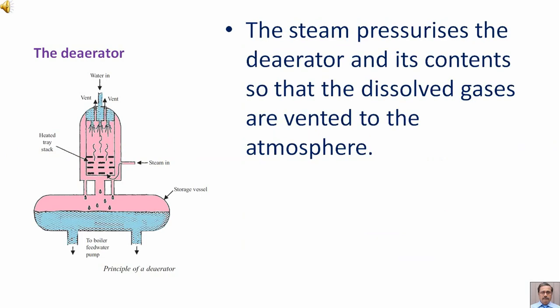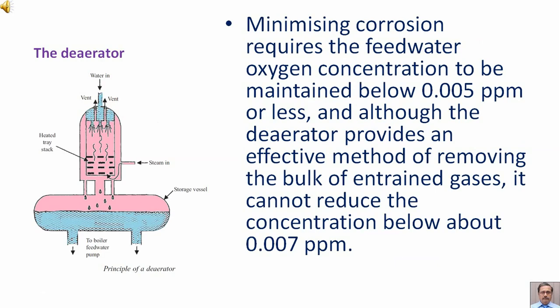The steam pressurizes the deaerator and its contents so that dissolved gases are vented to the atmosphere. Minimizing corrosion requires the feed water oxygen concentration to be maintained below 0.005 parts per million or less. Although the deaerator provides an effective method of removing the bulk of entrained gases, it cannot reduce the concentration below about 0.007 parts per million.